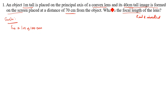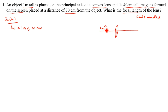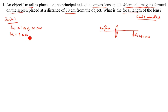The object, one meter tall, is placed on the principal axis of a convex lens. First, we will draw the convex lens. Ho equals 100 centimeters. The 40 centimeter tall image is formed on the screen — it is real and inverted, meaning it points downward. So Hi equals 40 centimeters.